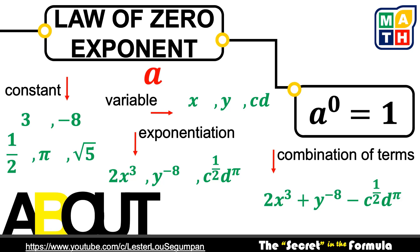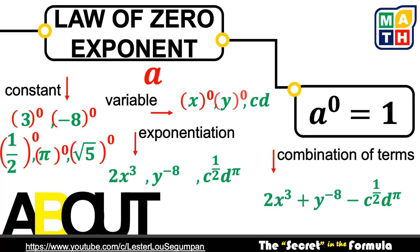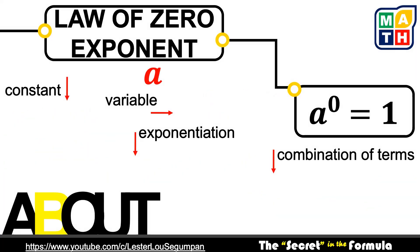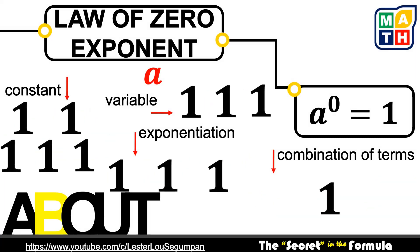The law of zero exponent tells us that no matter what the representation of variable a is — if we raise all of them to a power of 0, regardless if it's a constant, a variable, an exponentiation, or a combination of terms — it will always result in 1.